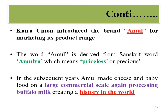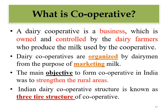Amul was the first dairy in the world to process buffalo milk and produce cheese and baby food powder from buffalo milk. A cooperative is a business owned and controlled by the dairy farmers who produce the milk. The main objective of cooperatives in India was to strengthen the rural area. The Indian dairy cooperative structure is known as a three-tier structure.